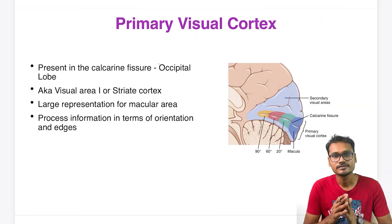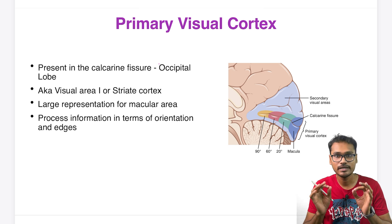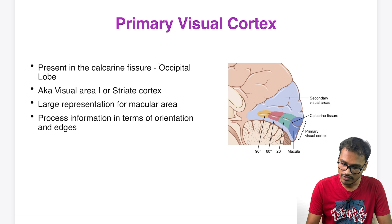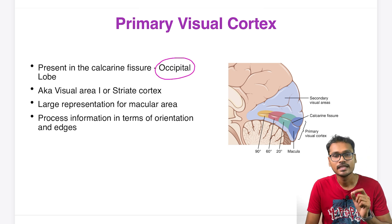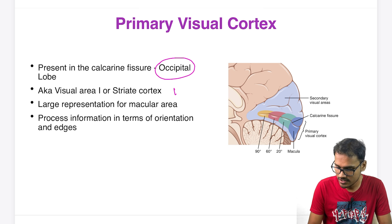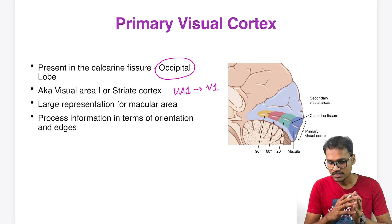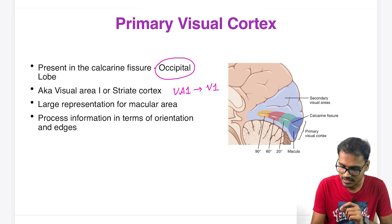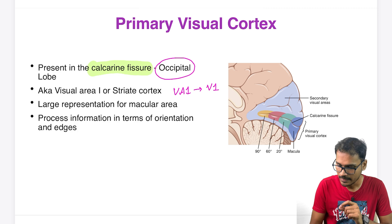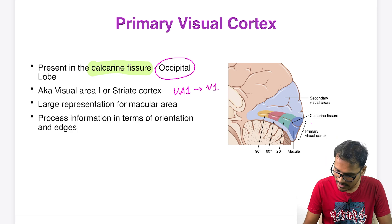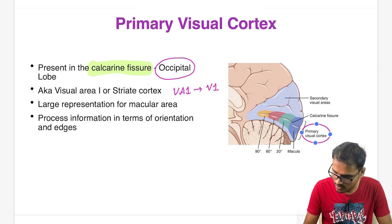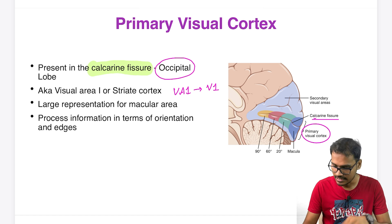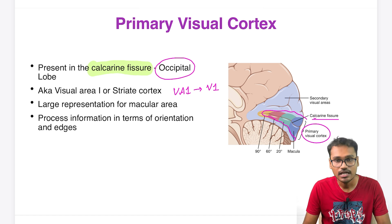The primary visual cortex is the core important area where basic visual information is interpreted. It is also called visual area 1, or V1, and sometimes called the striate cortex. It is located near the calcarine fissure. As you can see from the diagram, this occipital area is depicted, and the primary visual cortex near the calcarine fissure takes up a larger area.